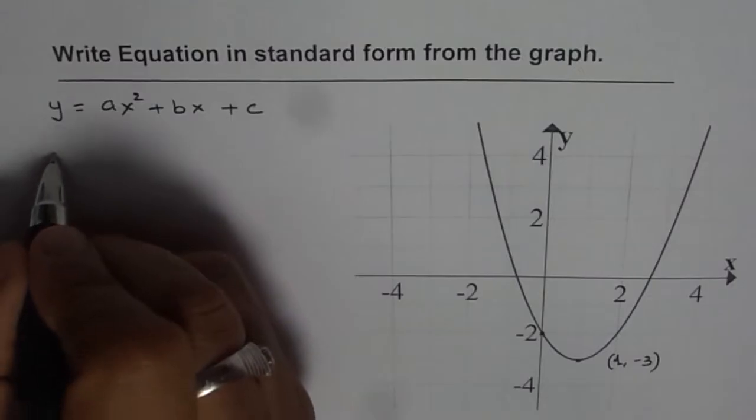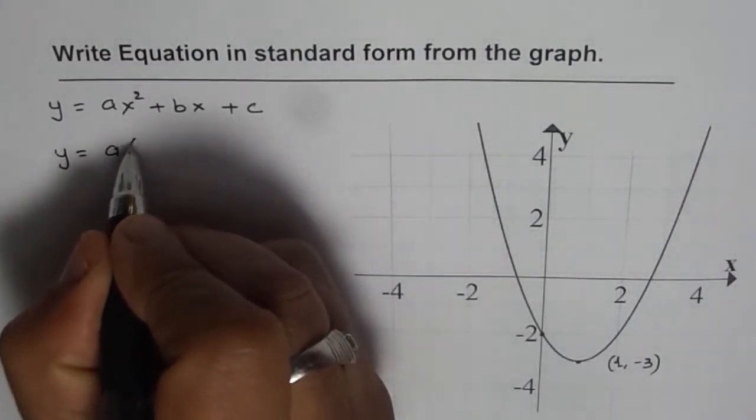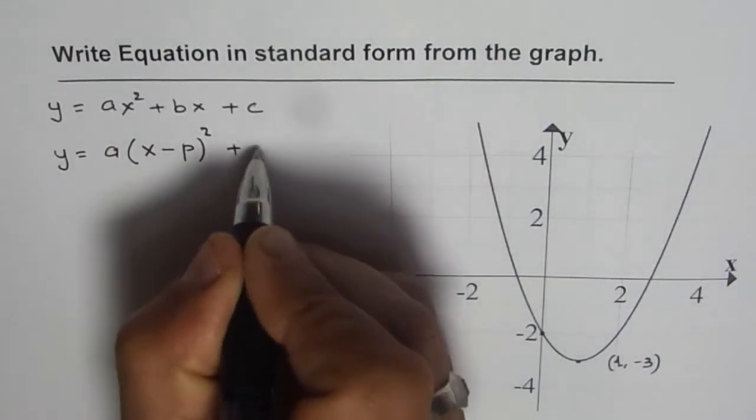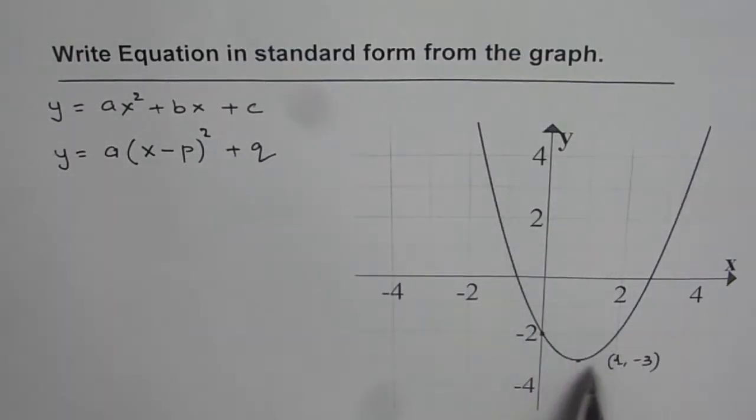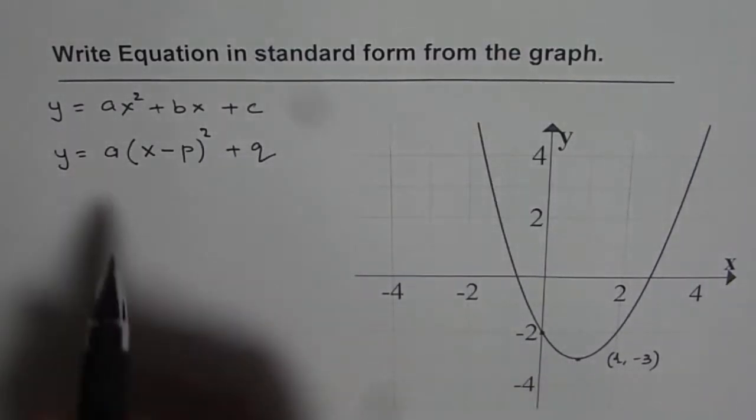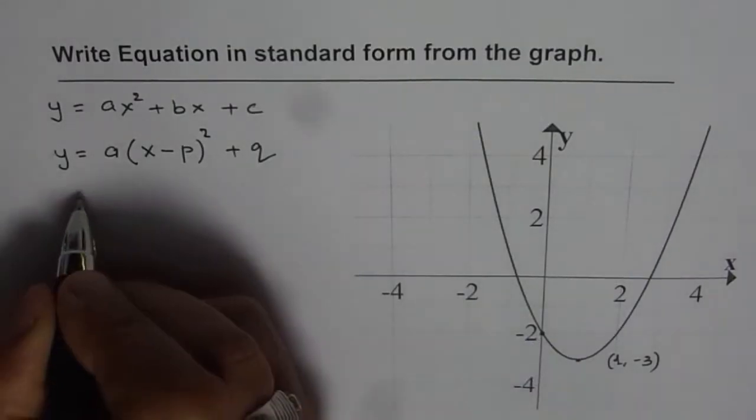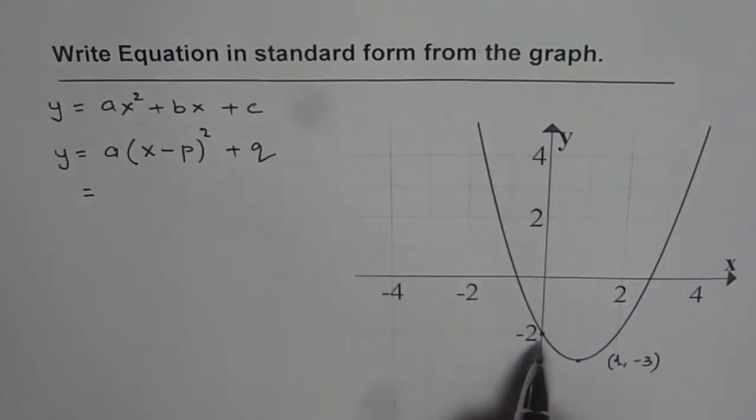So we will first write down the equation in vertex form which will be y = a(x - p)² + q where p and q are the points of the vertex and to find a we will utilize the y-intercept. So we can write down this equation with the given values.